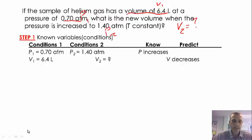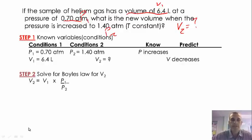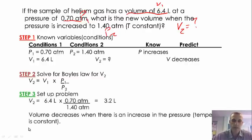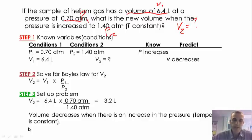Step two: we need to solve Boyle's Law for V2. We rearrange the equation to get V2 equals P1V1 divided by P2. Taking 6.4 liters times 0.7 ATMs divided by 1.4 ATMs, we end up with 3.2 liters. The volume decreases when there is an increase in pressure — we started with 6.4 liters and ended up with 3.2 liters.